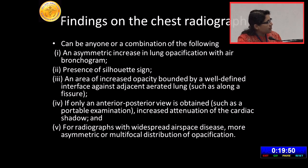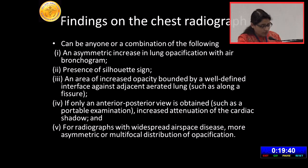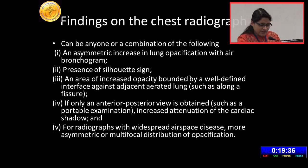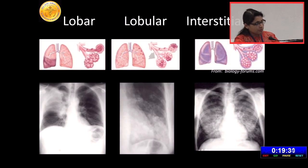If only an AP view is used, such as in cases of sick kids in portable examination, increased attenuation of the cardiac shadow in the retrocardiac region can be the only pathology on the chest radiograph. For radiographs with widespread airspace disease, a more asymmetric or multifocal distribution of opacification can be seen.